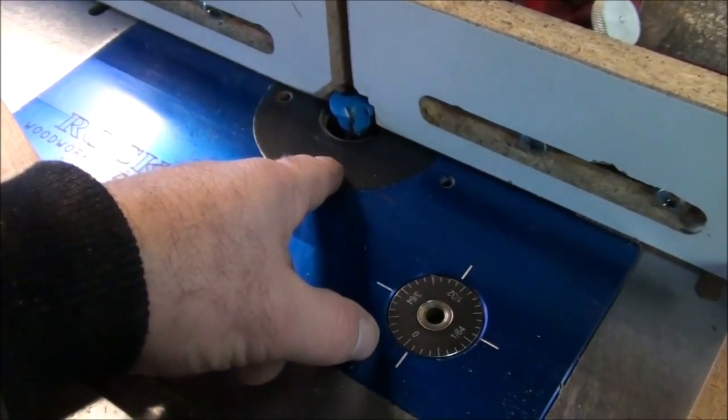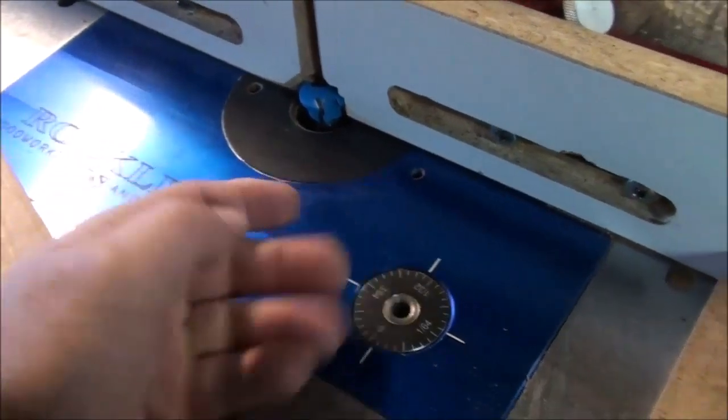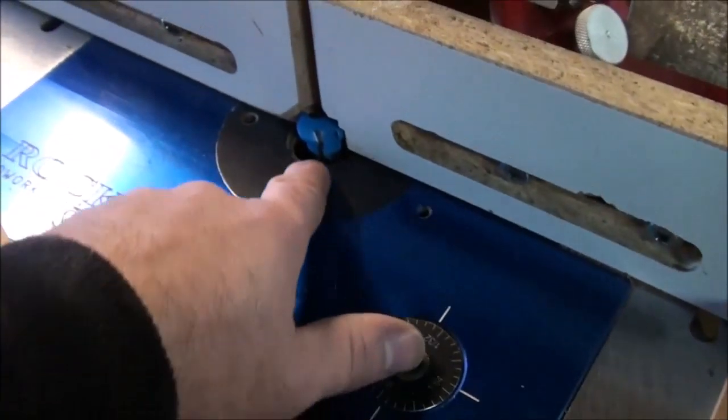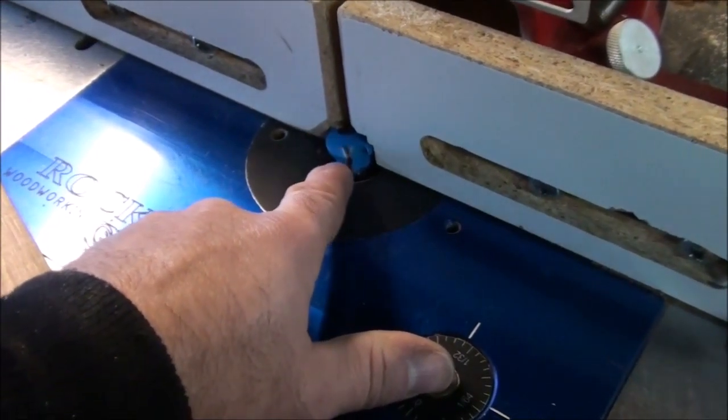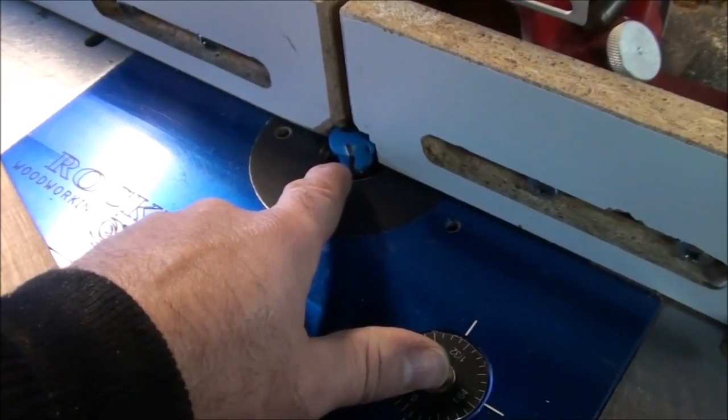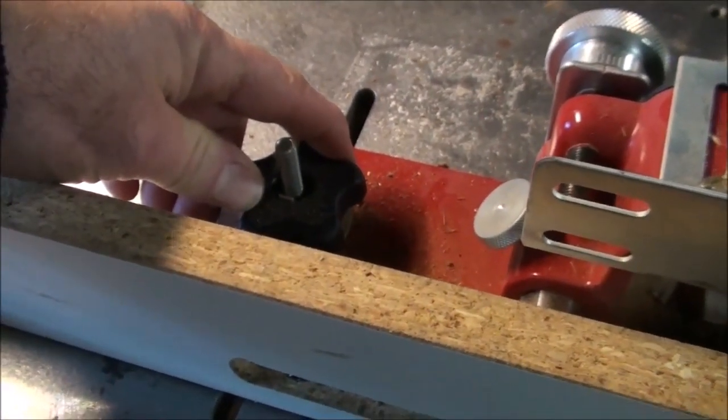This right here will raise and lower the elevation, the height of your router bit or, in this case, the shaper bit. And these knobs here, this knob here will loosen and tighten to where you can move the fence back and forward for your depth of cut this way.